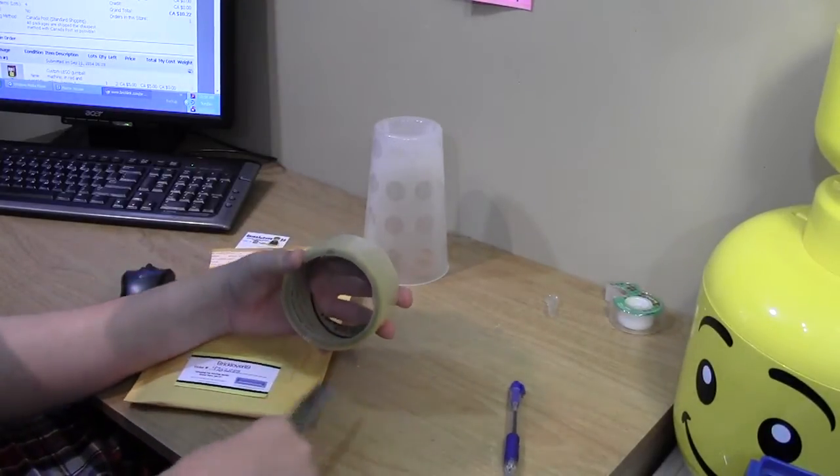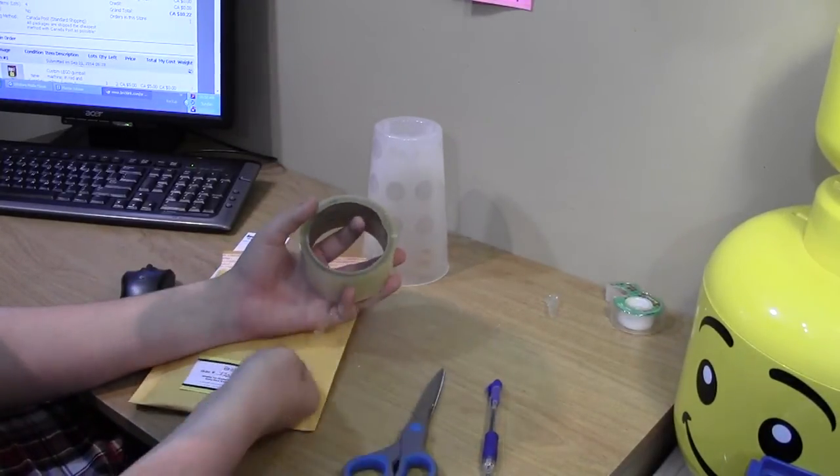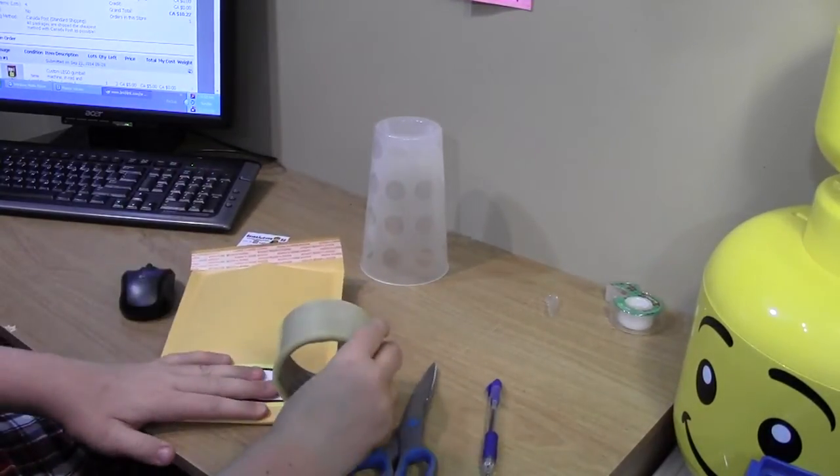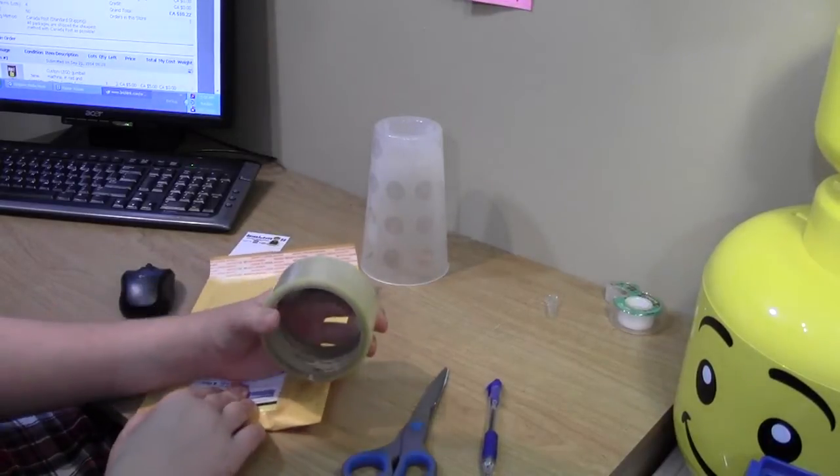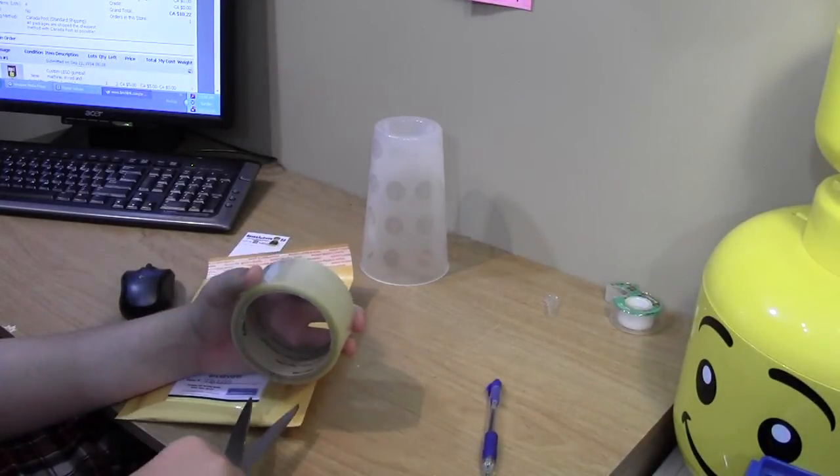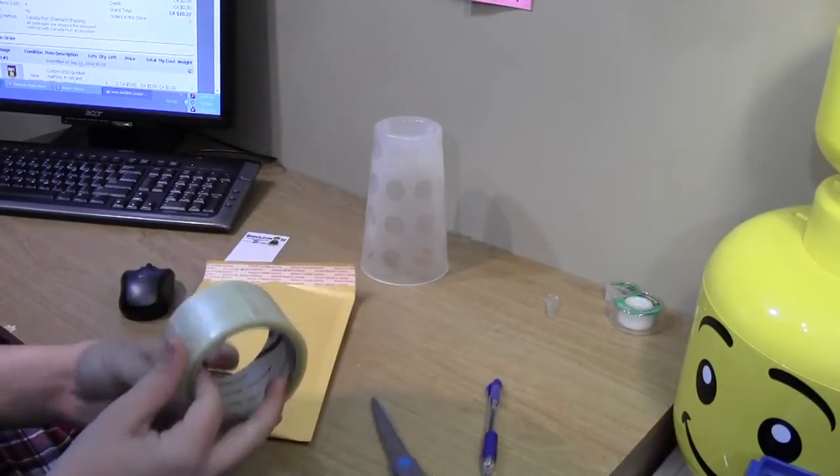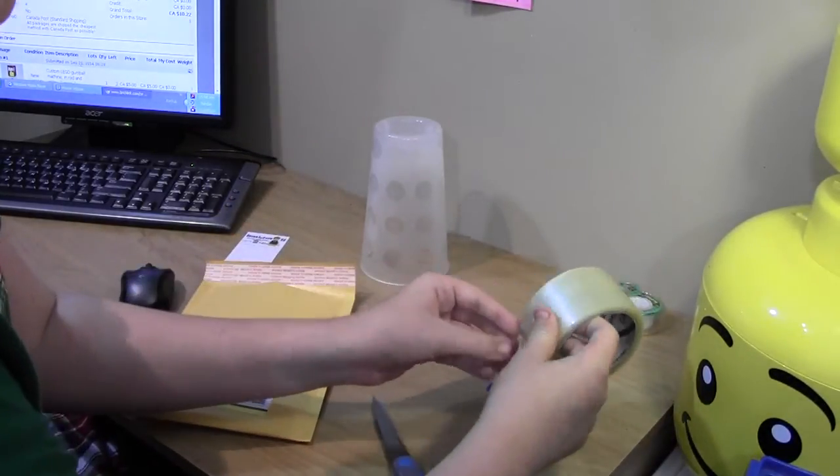The post office advised me not to because they had nowhere for the customs forms to go. Because this is on the back of the package in the center. So with my thing smack in the center, they said I can't do that. But I used to put it there, so that's why you're wondering.